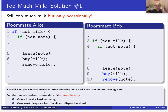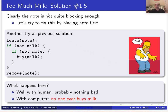Could we fix this by placing the note first? With humans, nothing bad happens because they have common sense. But with a computer, if I leave a note and then check — there's no milk, I need to buy it, but there's already a note — the pseudocode skips buying because it assumes someone is going to buy the milk. So nobody ever buys milk. You can't leave the note beforehand either; that doesn't solve anything.